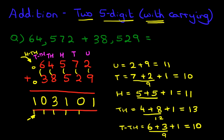And that is our answer. It is one hundred and three — and we can put a comma here — one hundred and three thousand, one hundred and one. And that is the addition of two five-digit numbers with carrying. Thank you.